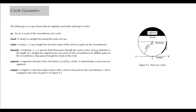A diameter is a special chord that passes through the center of the circle. If a radius goes from the center to the circumference, and the diameter goes from circumference to circumference through the center, we can determine that d equals 2r.